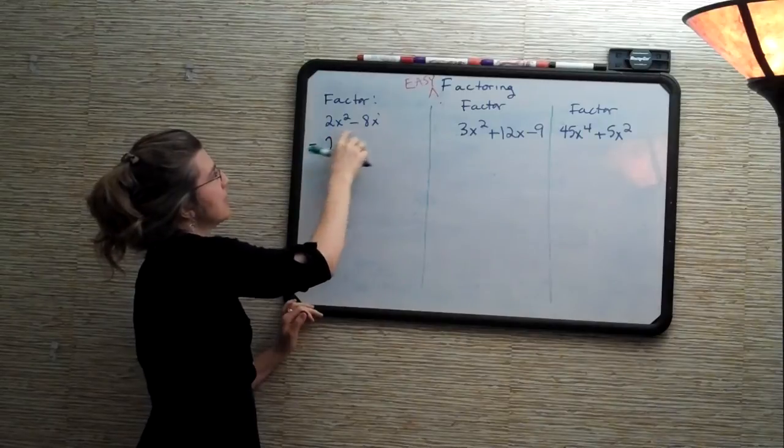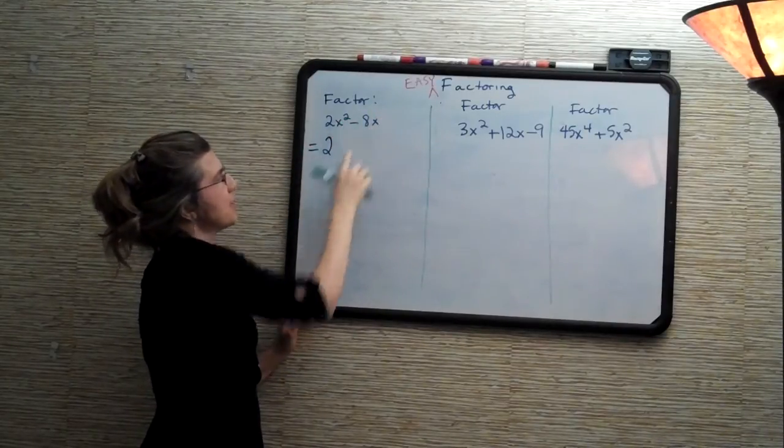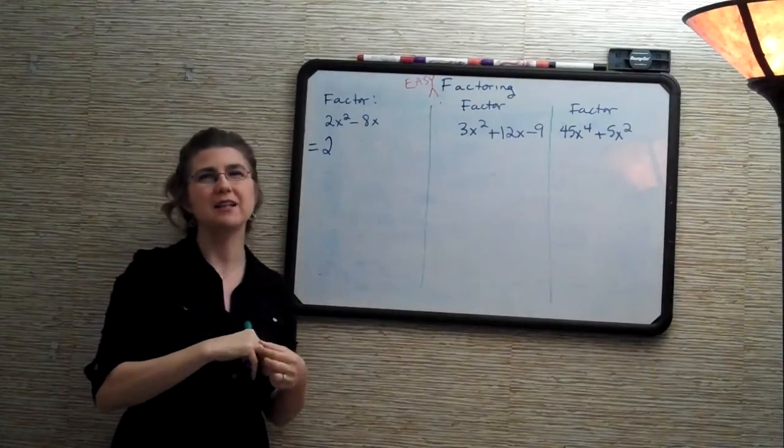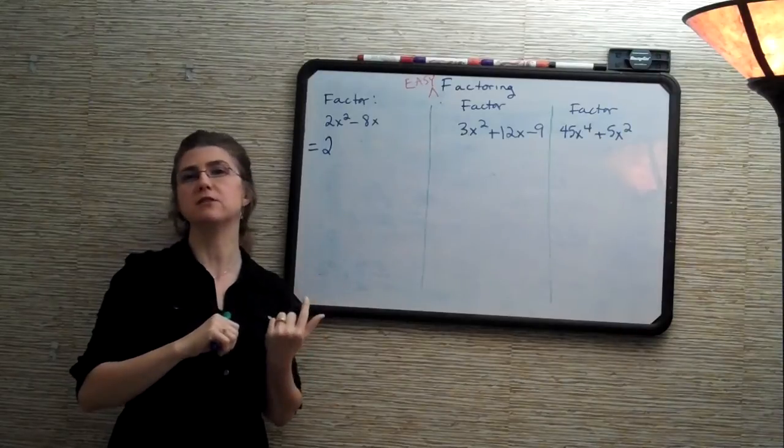Then, the highest power of x here is x squared, but there is only an x squared in the left term and not in the right one. So we can't take the highest power of x. What we want to find is the lowest power of x that is present in every single term.